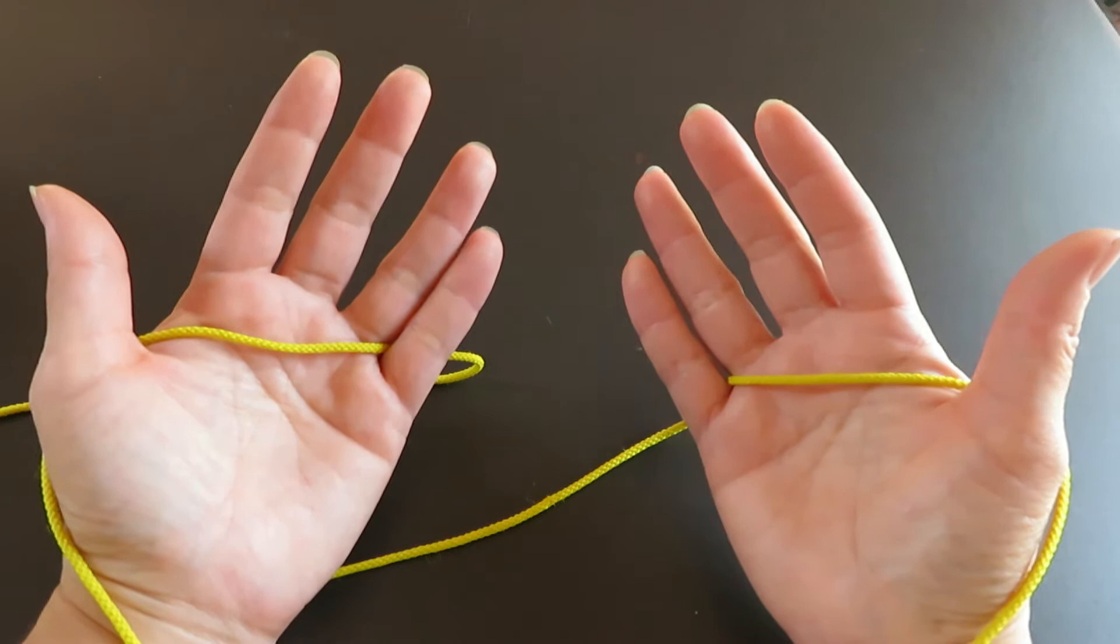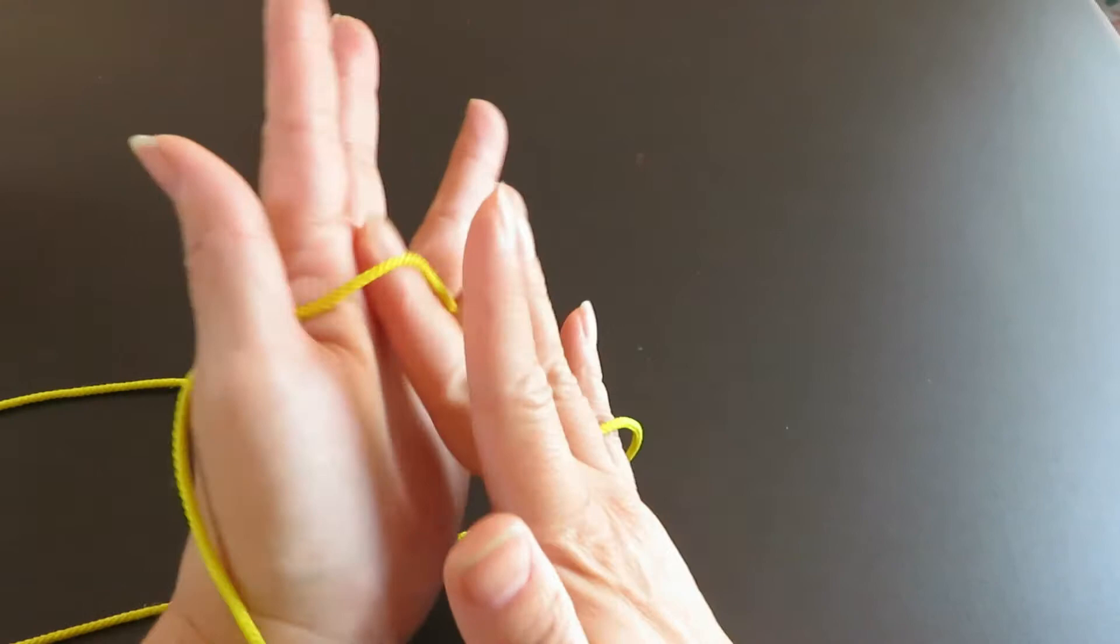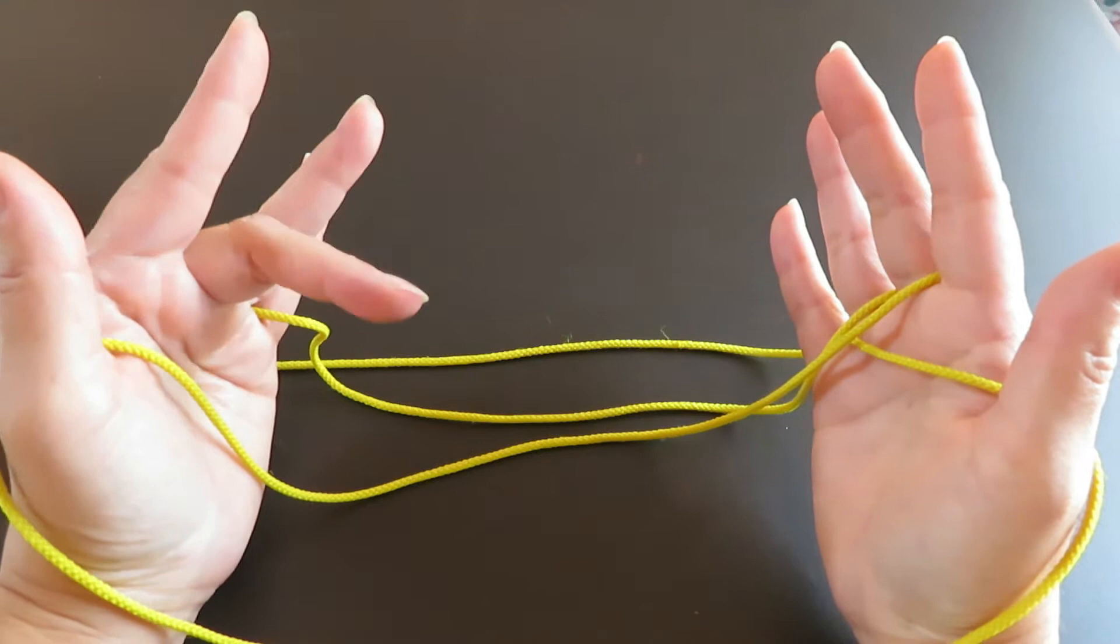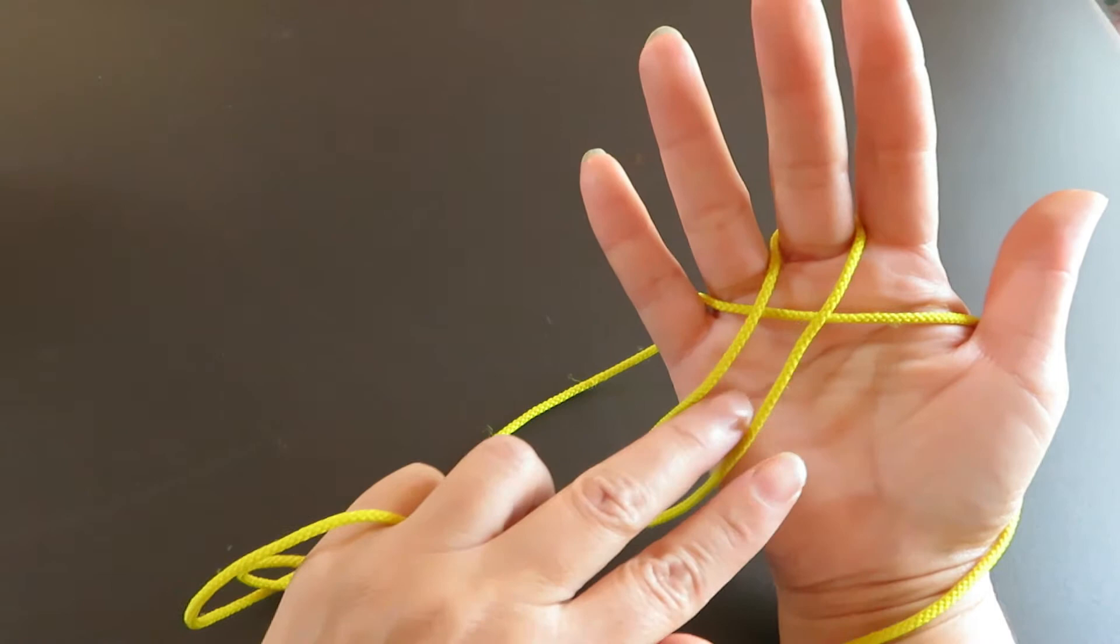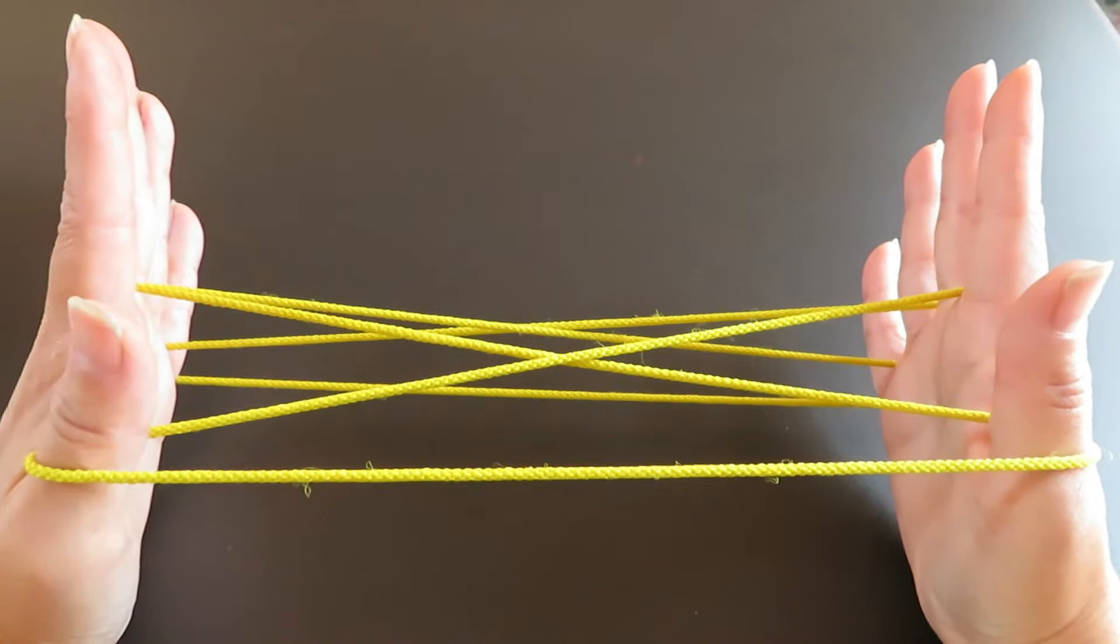Now, with right hand middle finger, pick this horizontal string of left hand and pull to the side. And with left hand middle finger, pick this horizontal string of right hand in between two these vertical strings. Like this.